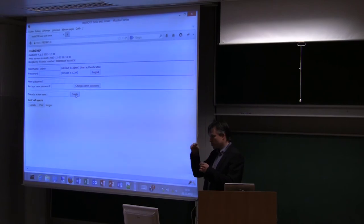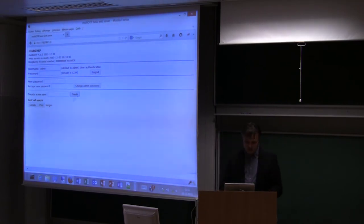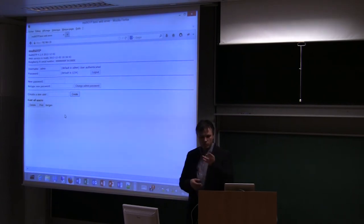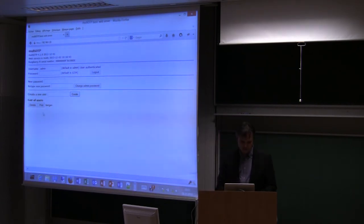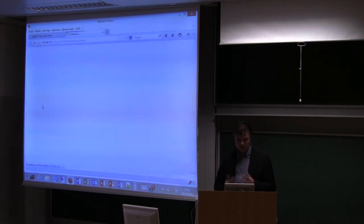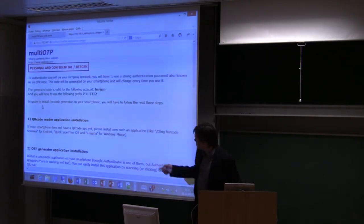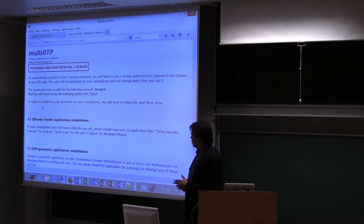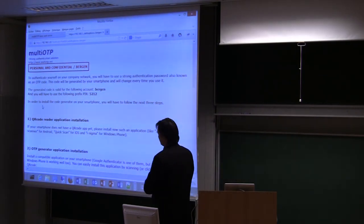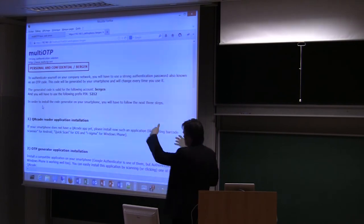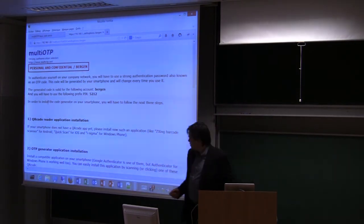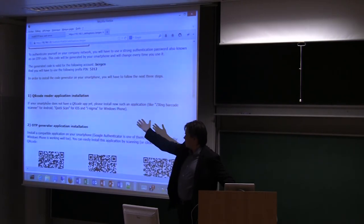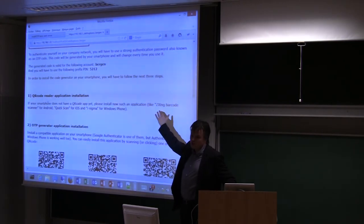I can change the password also to put 1234567. And we can create a user. Let's say we create the user Bergen. I say create the user, so it makes everything automatically. Now the idea is to provision an account so you will be able to use your phone. I just print the configuration file and we have a little template. I have generated automatically a pin, 5212. The name is Bergen. The interesting thing is it says you will have to have a QR code reader. Second, you have to install Google Authenticator, so you have the QR code for doing that. At the end you have to provision your token.